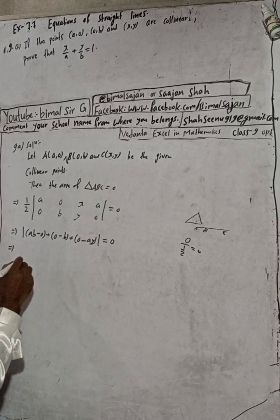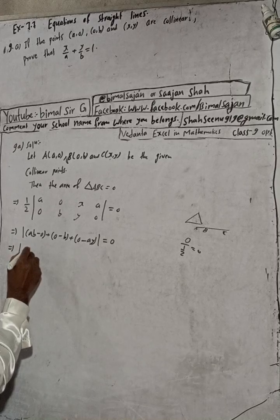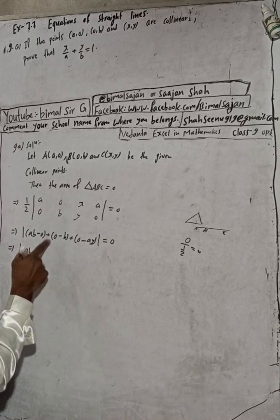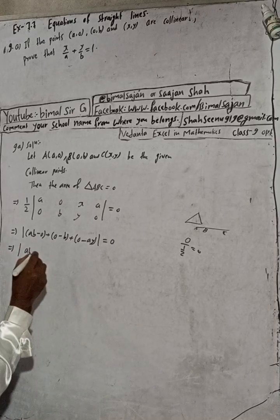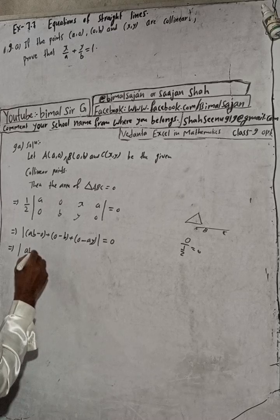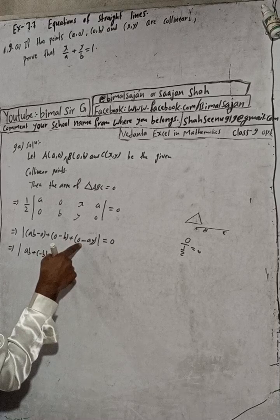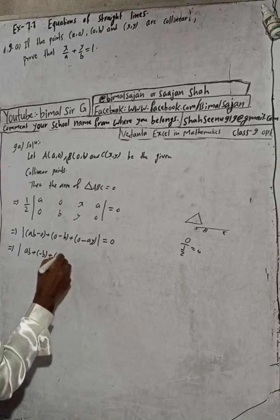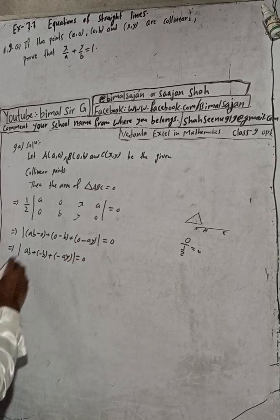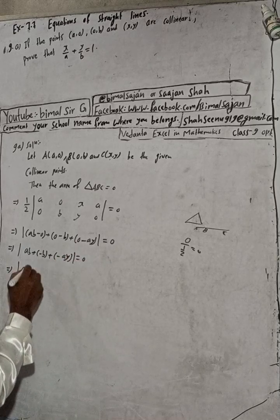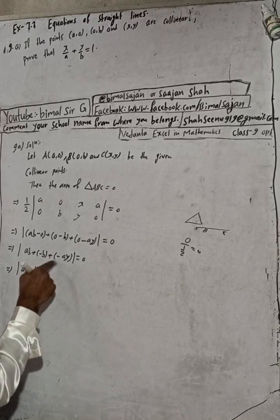Simplifying: ab minus zero gives ab, plus zero minus bx gives minus bx, and then minus ay. So we have ab minus bx minus ay is equal to zero.